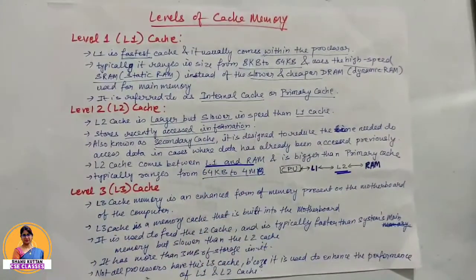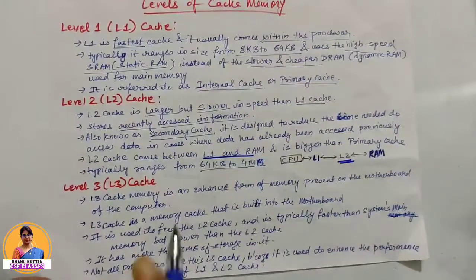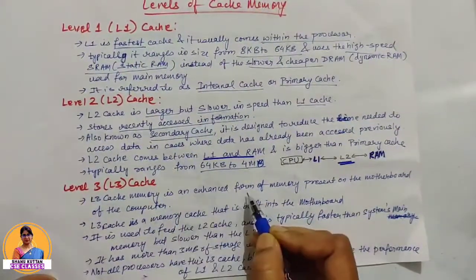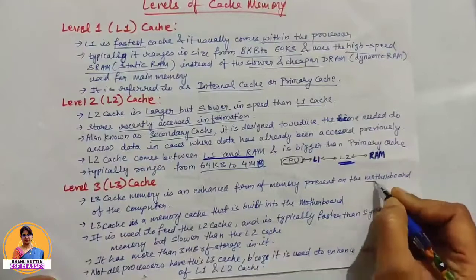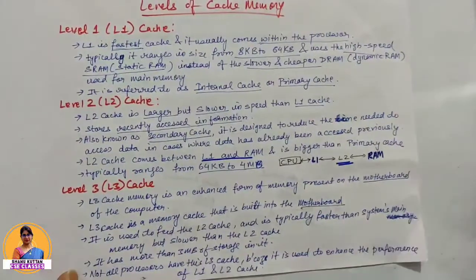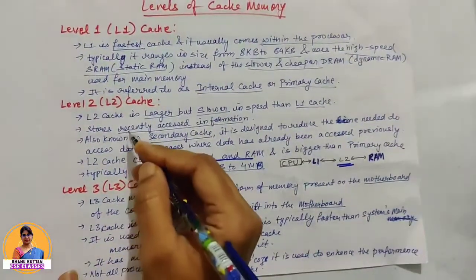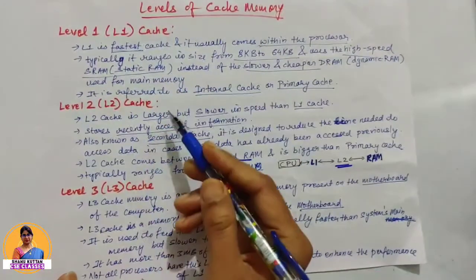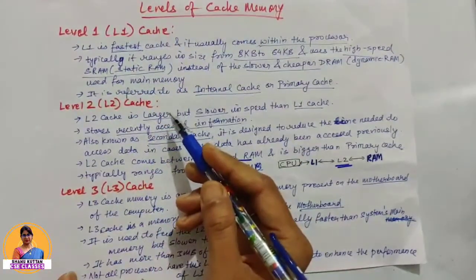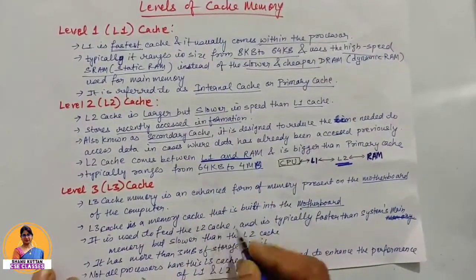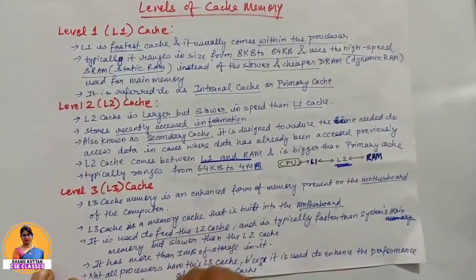Next is Level 3 cache. Level 3 cache memory is an enhanced form of L2 cache. It is present on the motherboard of the computer. This is why L3 cache is a little slower than L1 and L2. L3 cache is basically used to feed or support L2 cache.